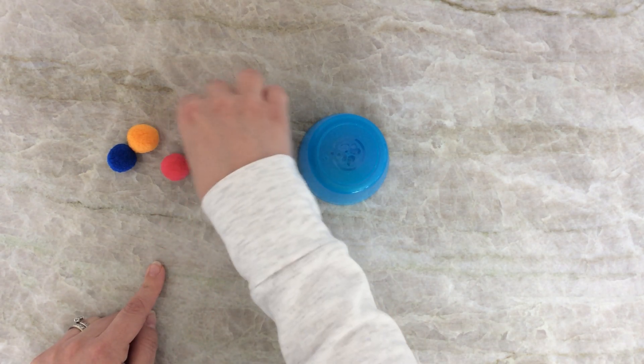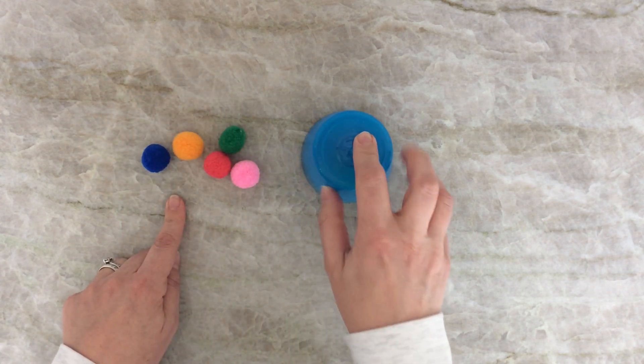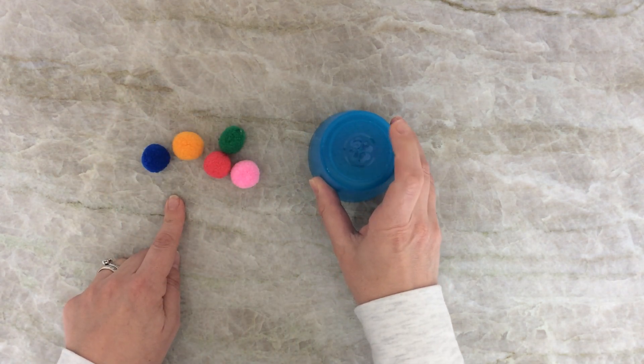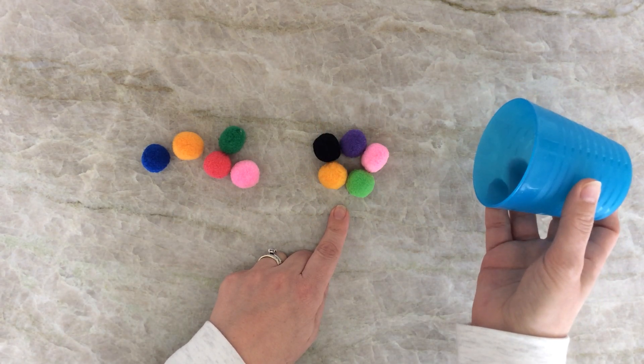Open them. I have 1, 2, 3, 4, 5 pom-poms here. How many do you think are hiding under the cup? If you guessed 5, you're right.